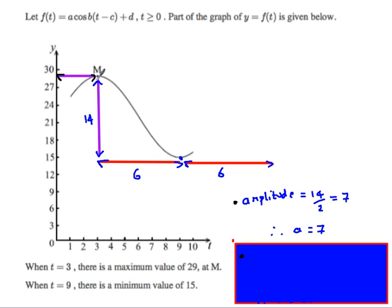Amplitude, okay, again, very similar. Maximum, 29. The minimum was 15. Therefore, the amplitude, well, that distance is 14. Divided by 2, amplitude is 7.